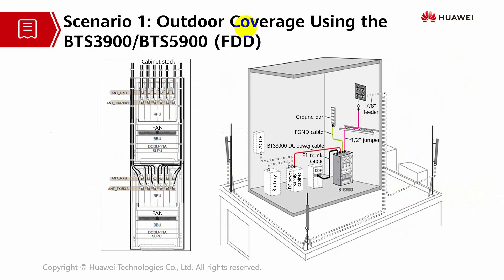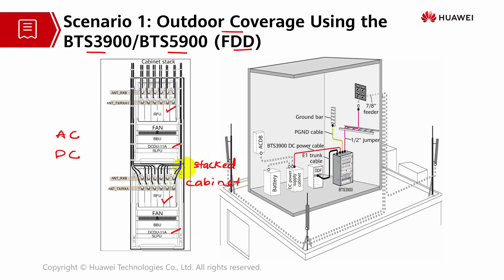Scenario 1 is outdoor coverage using BTS 3900 series or BTS 5900 series in an FDD network. The external power input can be AC or DC. It is configured with RFUs and RRUs. A DC DU with circuit breakers supplies power to the BBUs and RRUs. The cabinets are stacked. The maximum configuration is two BBUs with DC DUs and around nine RRUs giving less than 800 watts total power consumption, compared to six RRUs which can give up to 1200 watts.